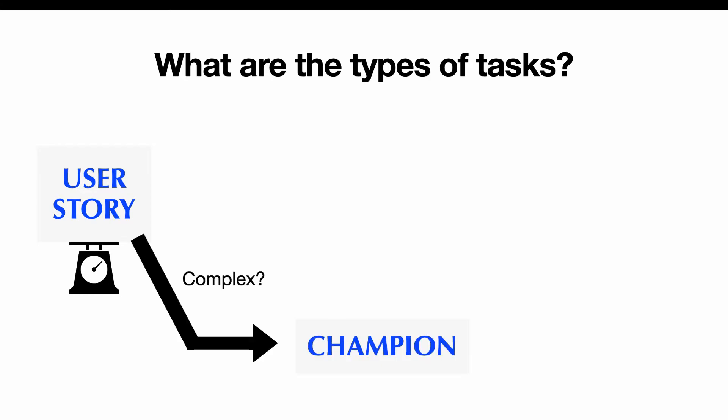If a user story is a bit more complex — say a PO is creating it and they don't have the technical expertise — then it may be championed in refinement by another developer who would take a deeper look into how to solve or approach the task. This is a side thing; it's not a different task type, it just gets some extra checks.